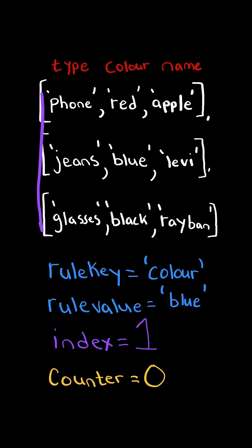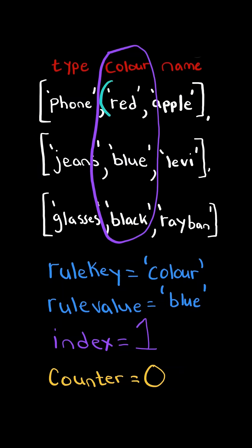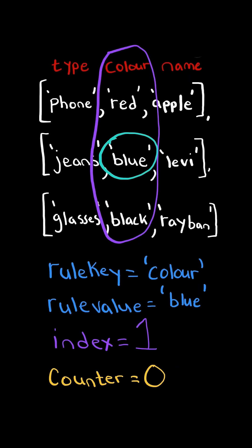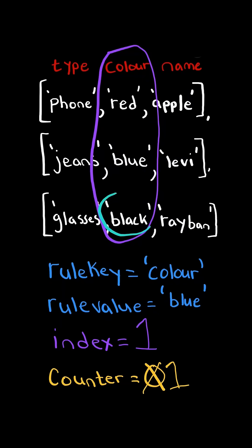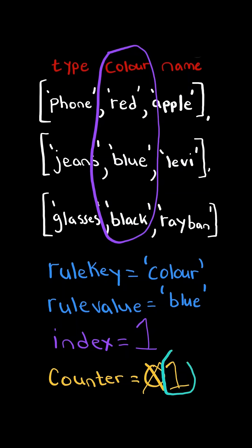We will iterate through the list and look at index one. The color does not match our rule value, so we continue and check the next. Now the color does match the rule value, so we increment our counter, and we check the next. The color does not match the rule value, so we continue. At the end, we return counter.